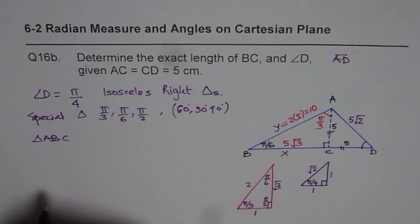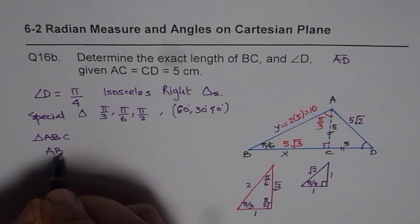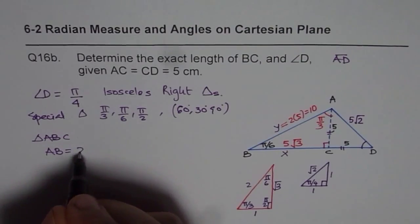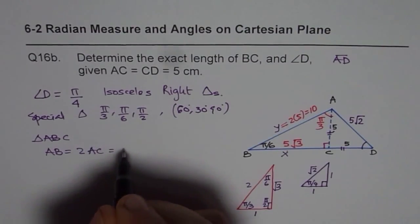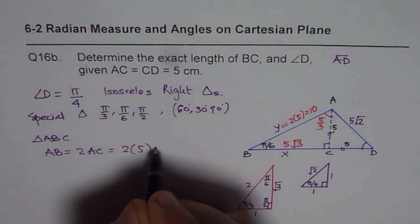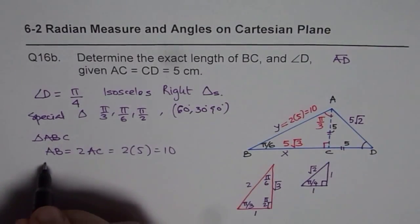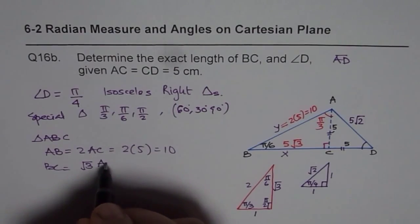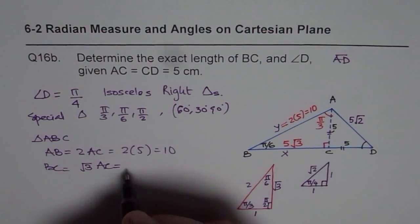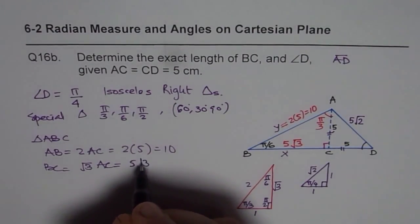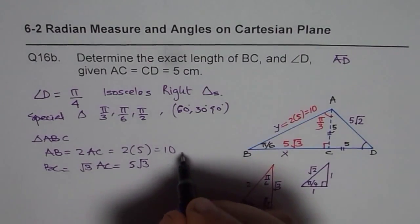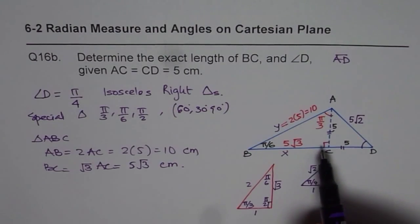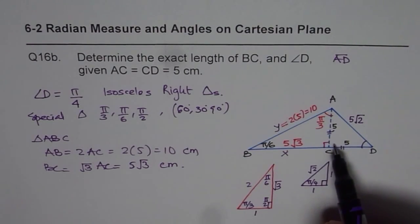And we can see that AB is equals to twice AC, right? Twice AC, which is 2 times 5 equals to 10. And BC is square root 3 times AC, right? Which is 5 square root 3. And all the units are in centimeters. So just write centimeters for the units. So like this, you can very easily do the question, right?